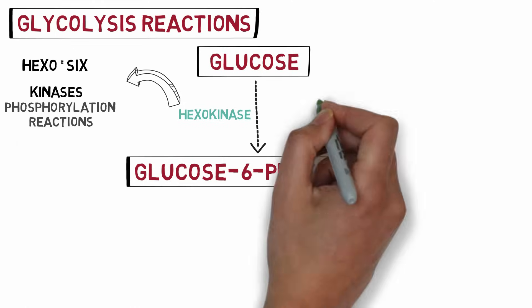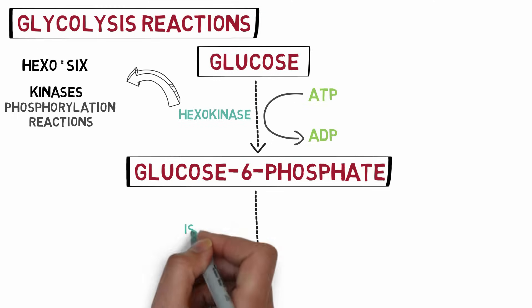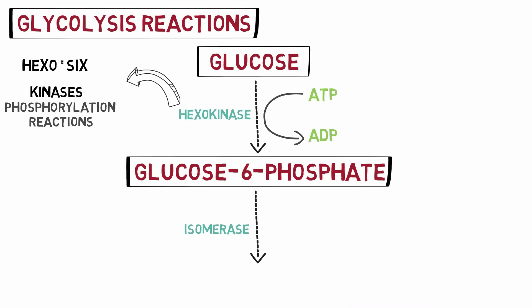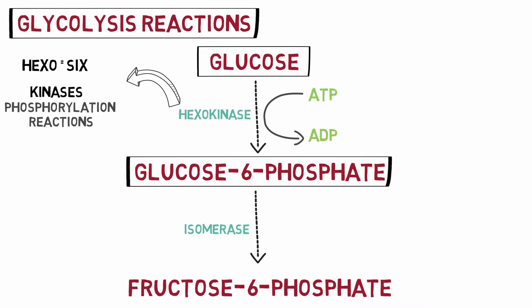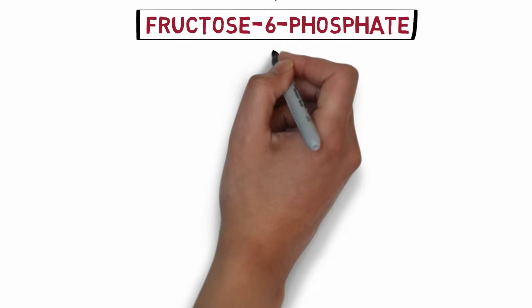Hexokinase transfers a phosphate molecule from ATP to glucose, converting glucose to glucose 6-phosphate. In this reaction, ATP is converted to ADP, utilizing one molecule of ATP. Next, glucose 6-phosphate is converted to its isomer fructose 6-phosphate by the enzyme isomerase. This is a simple rearrangement reaction.